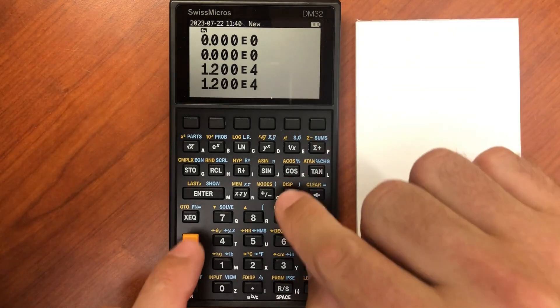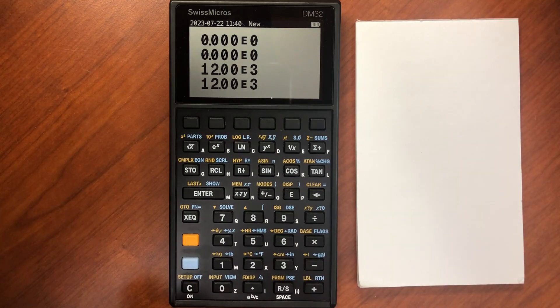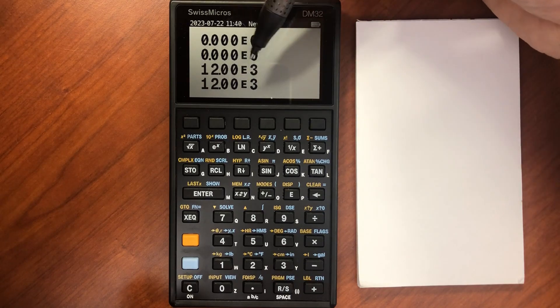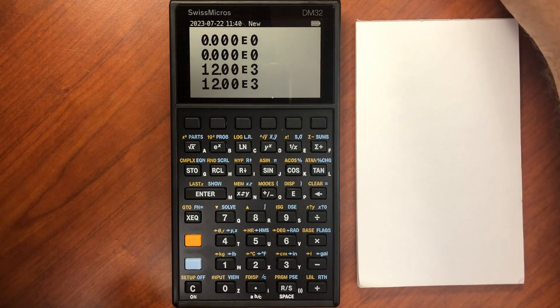So if I change that display mode to engineering, and again say I want three decimal points, it has that same number, that 1.2 times 10 to the fourth, or 12,000, as 12 times 10 to the third. Very useful for engineering calculations.